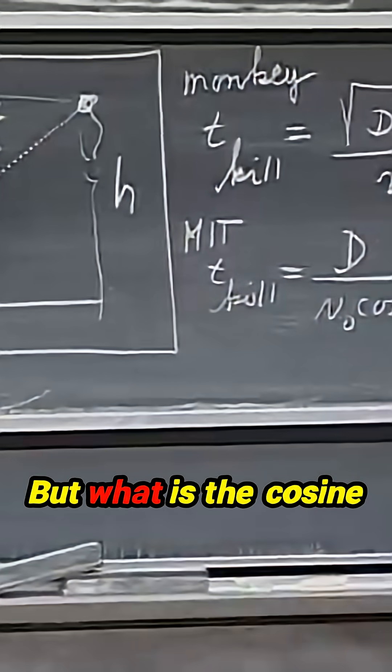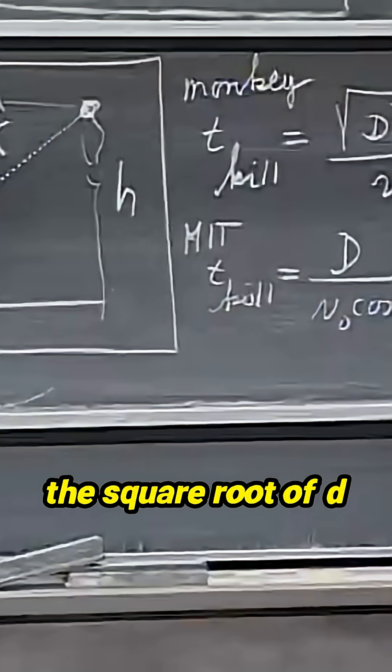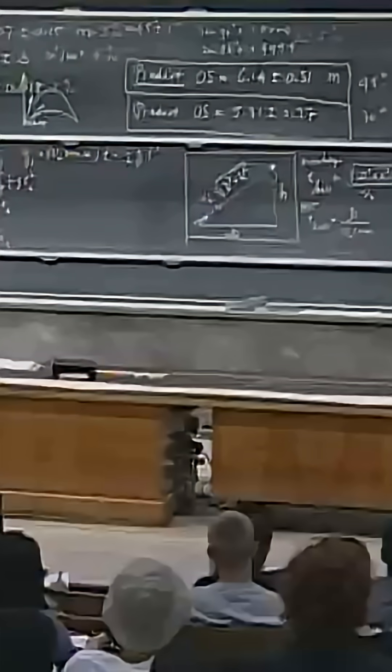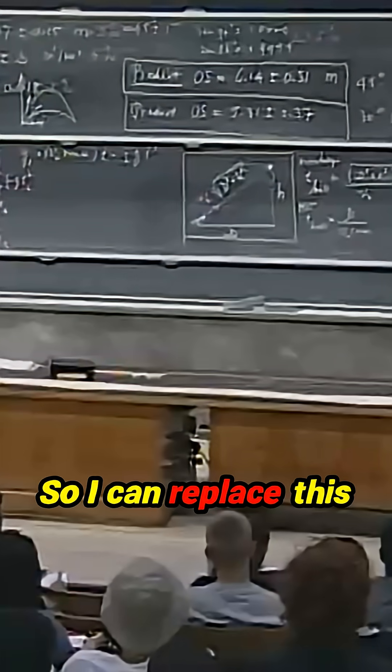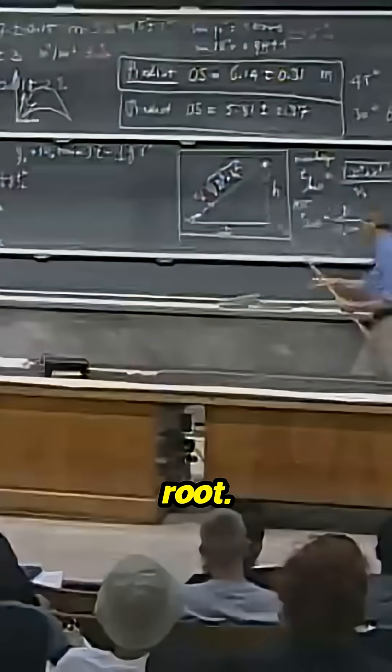But what is the cosine of alpha? That is d divided by the square root of d squared plus h squared. So I can replace this cosine alpha by d divided by the square root.